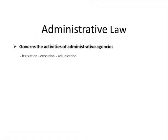Administrative agencies can make rules or legislate when delegated to them by the legislature as and when needed. They can execute, implement, or enforce public policy. They can also adjudicate or pronounce decisions while giving judgment on certain matters. These duties, powers, and the manner in which these powers are executed are governed by administrative law.